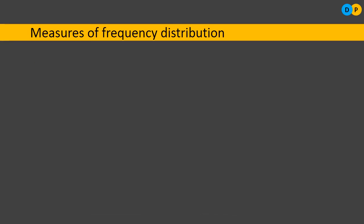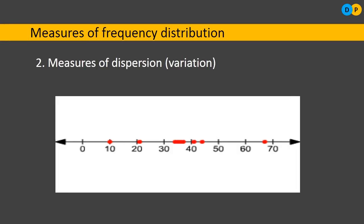The second measure of frequency distribution is measure of dispersion. If 50 students take an examination, most may score between 30 to 50 marks, but some deviate from the central value — scoring 10, 20, or even 100. Dispersion refers to the variation that can be observed from the central point; what is the deviation from the average. It is also simply called variation.